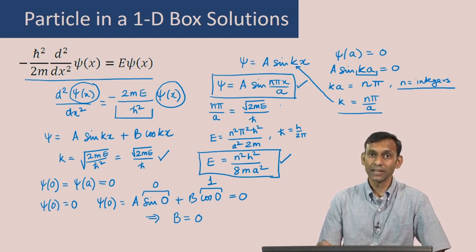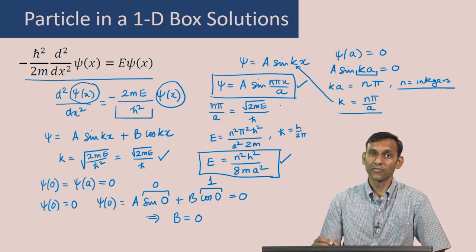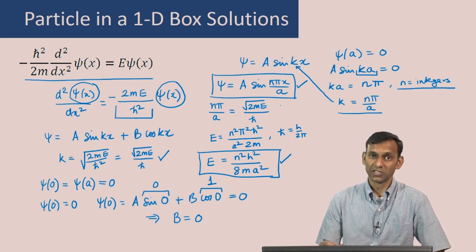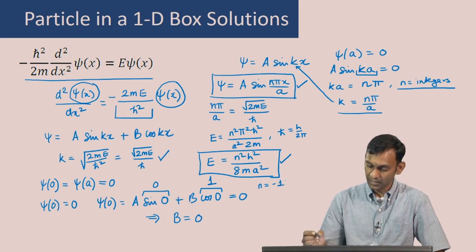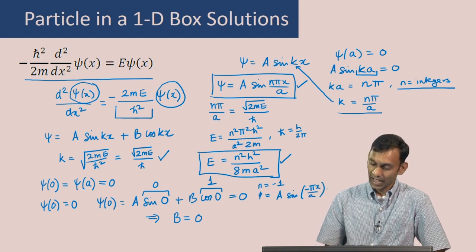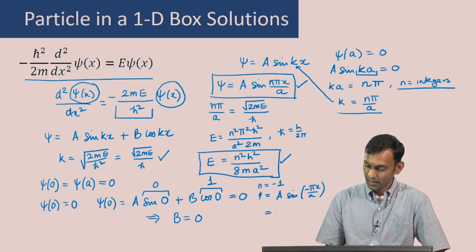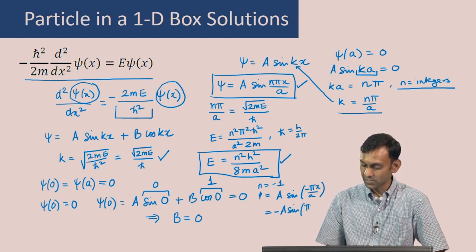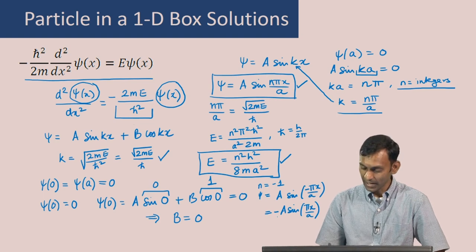The quantum number n takes values 1, 2, 3, and so on. If n = 0, the wave function becomes simply ψ = 0, which is not allowed. For negative integers, for example n = −1, we get ψ = A sin(−πx/a) = −A sin(πx/a), which is just the eigenfunction for n = 1 multiplied by −1. So negative integers do not give new solutions.